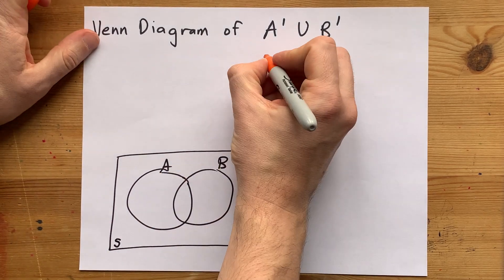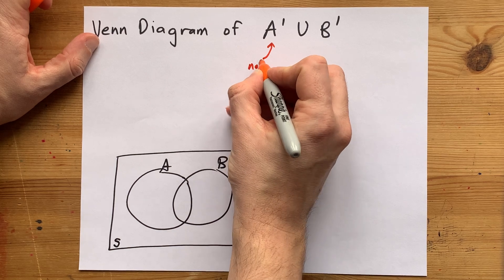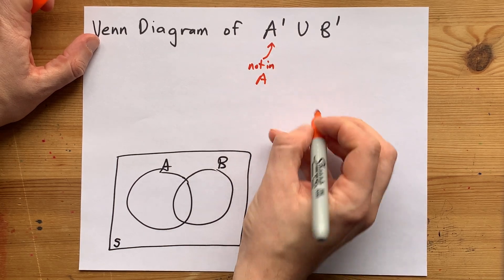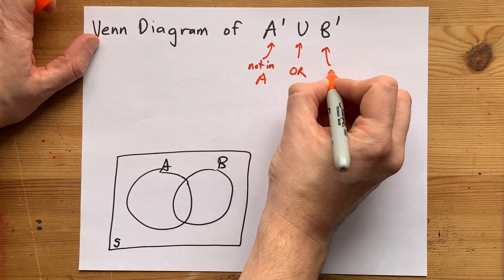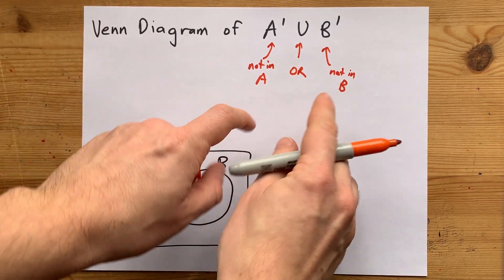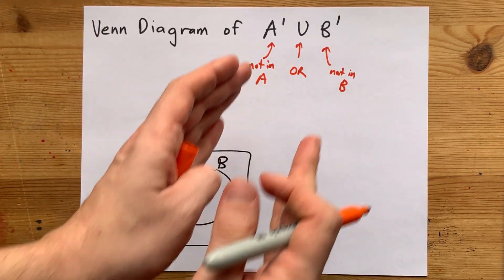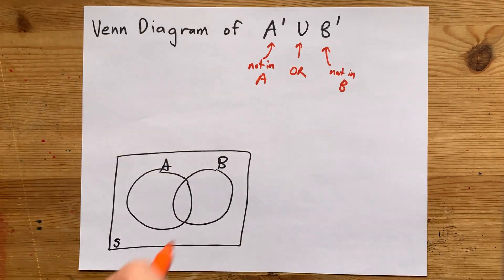And in this diagram, I'm going to get to shade in all of the sections that are not inside of A or also not inside of B. Now, the or operator here means that a section only has to fit one of these descriptions or both in order to count towards the whole.